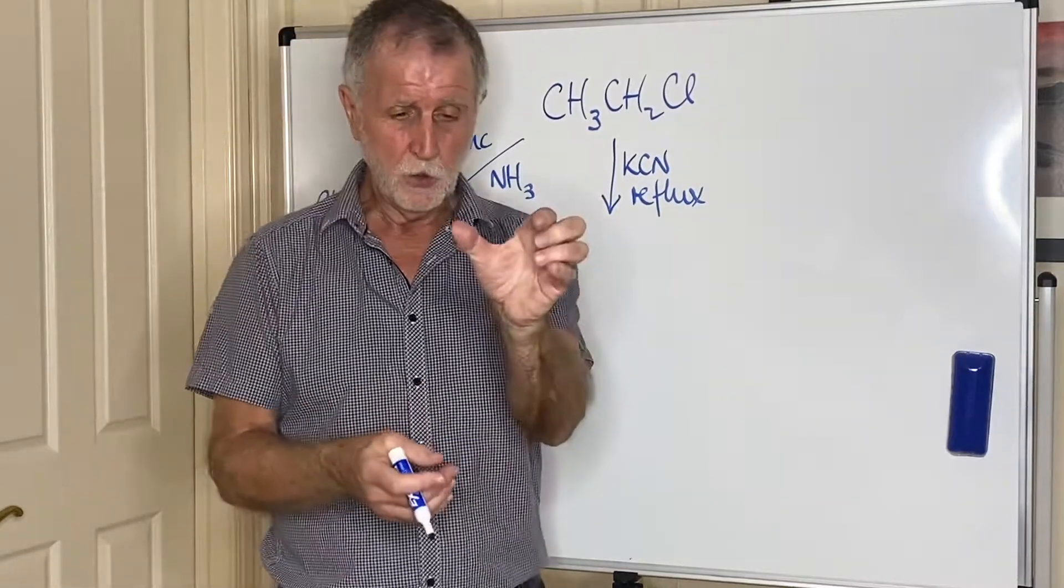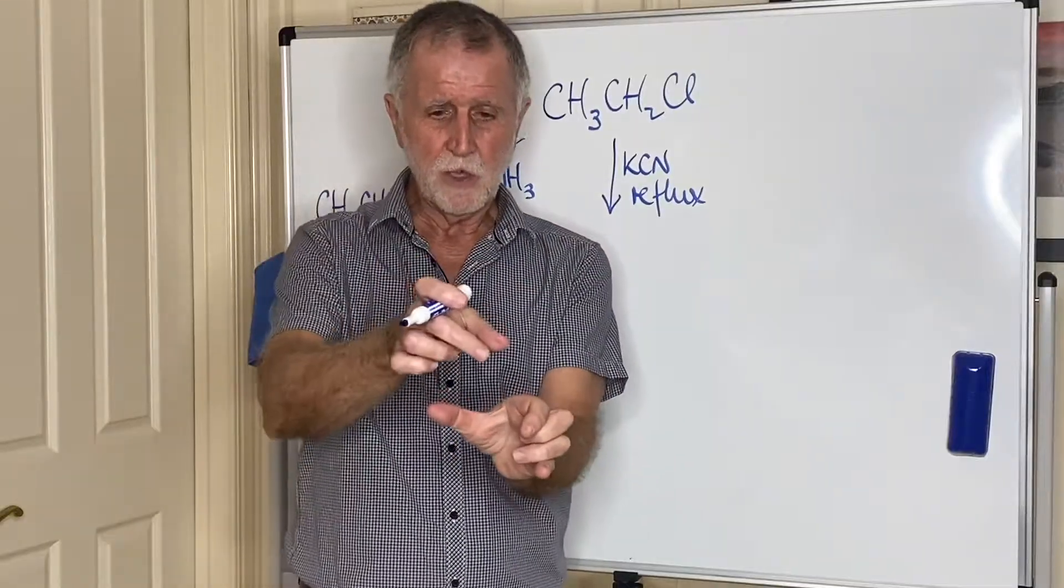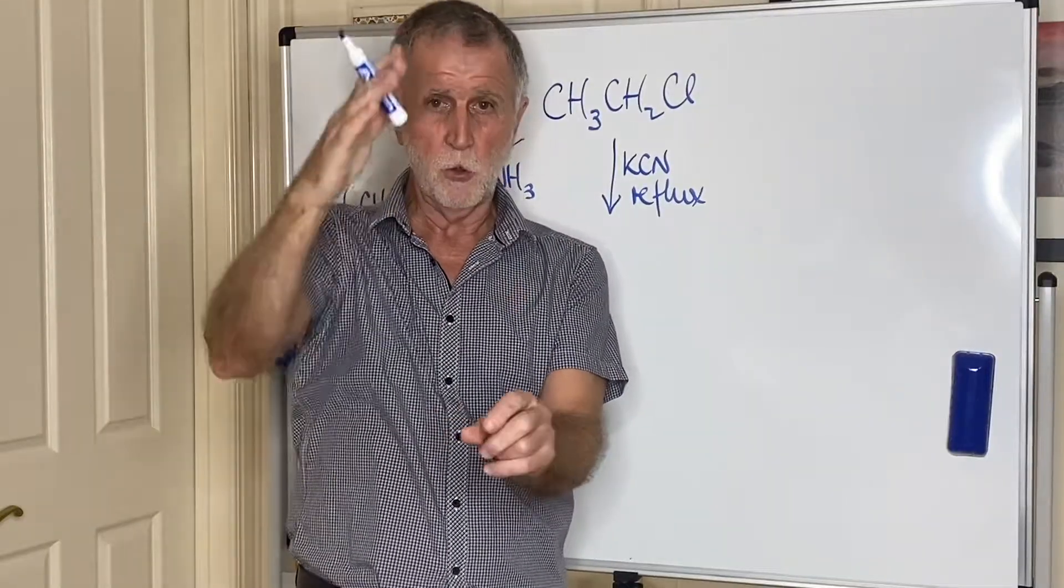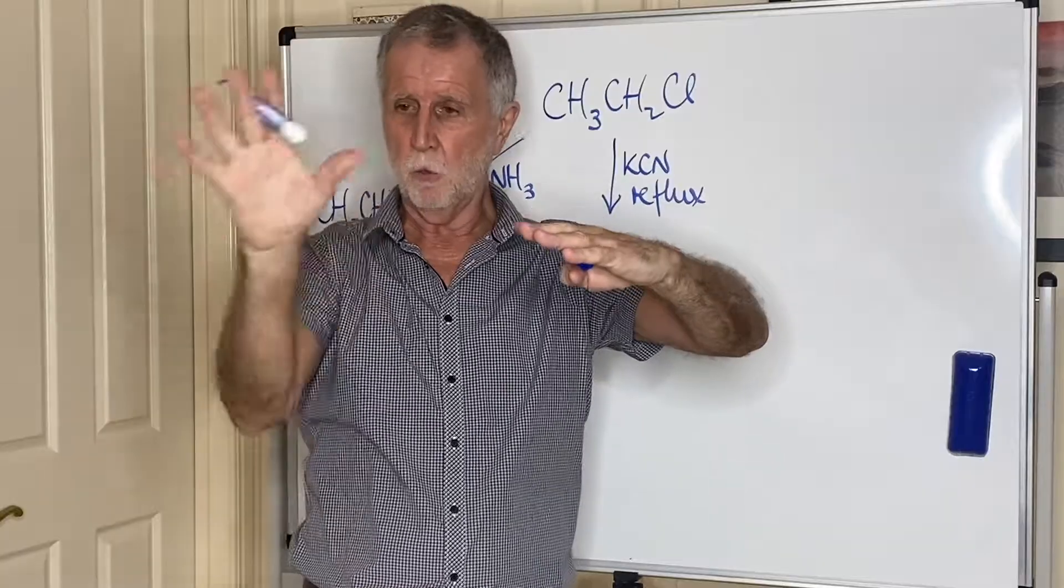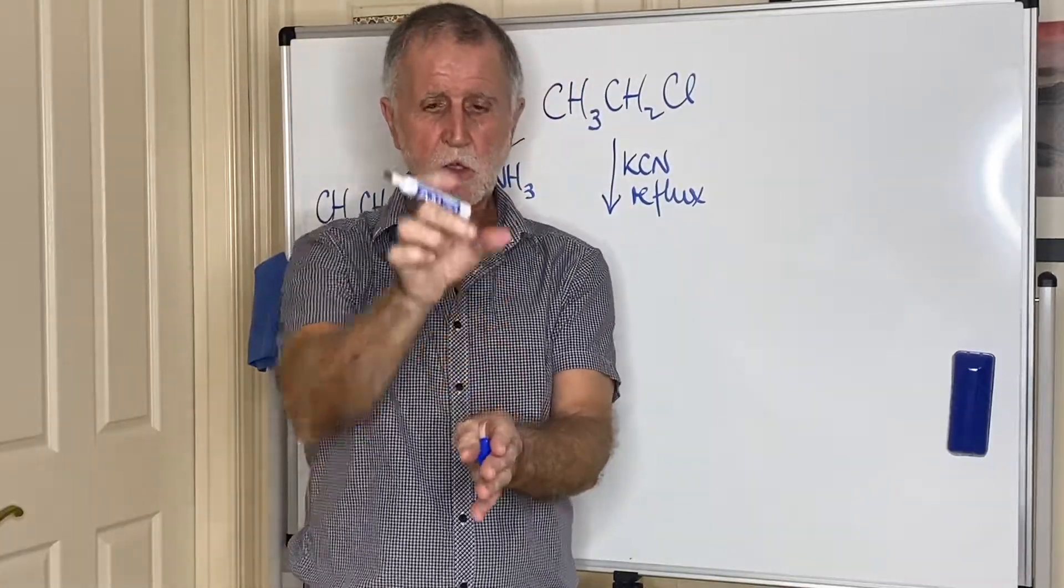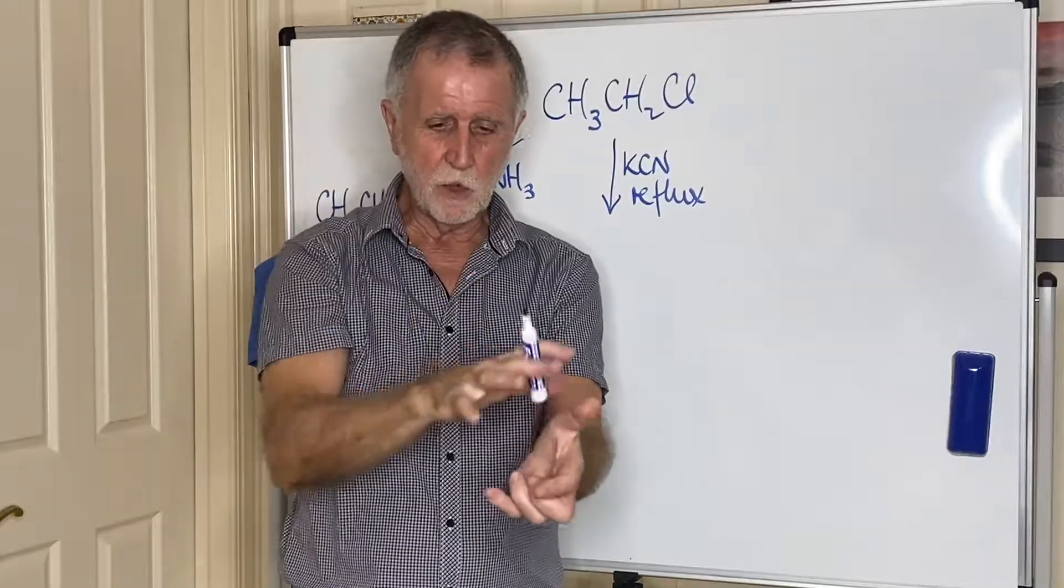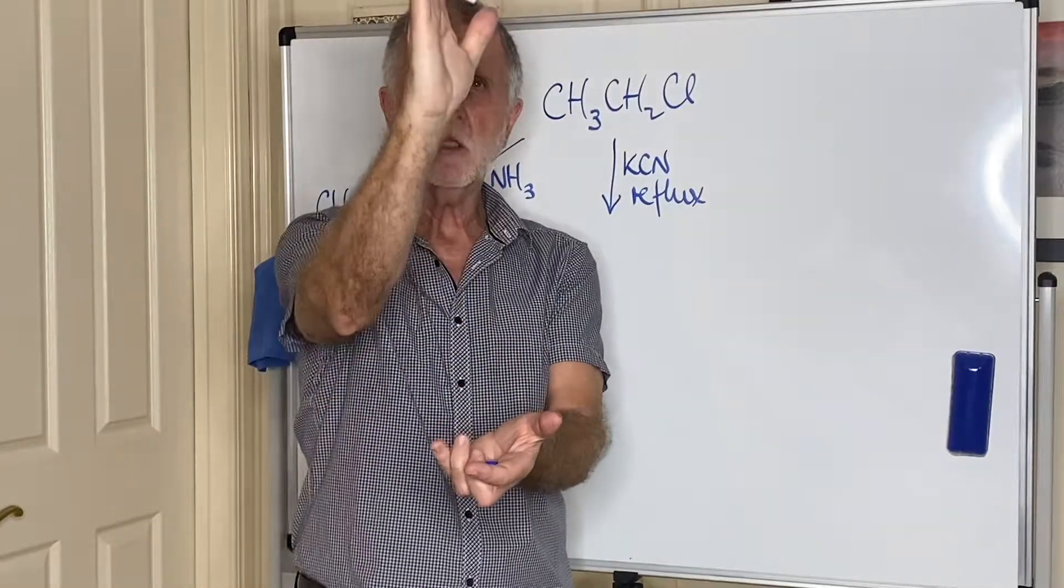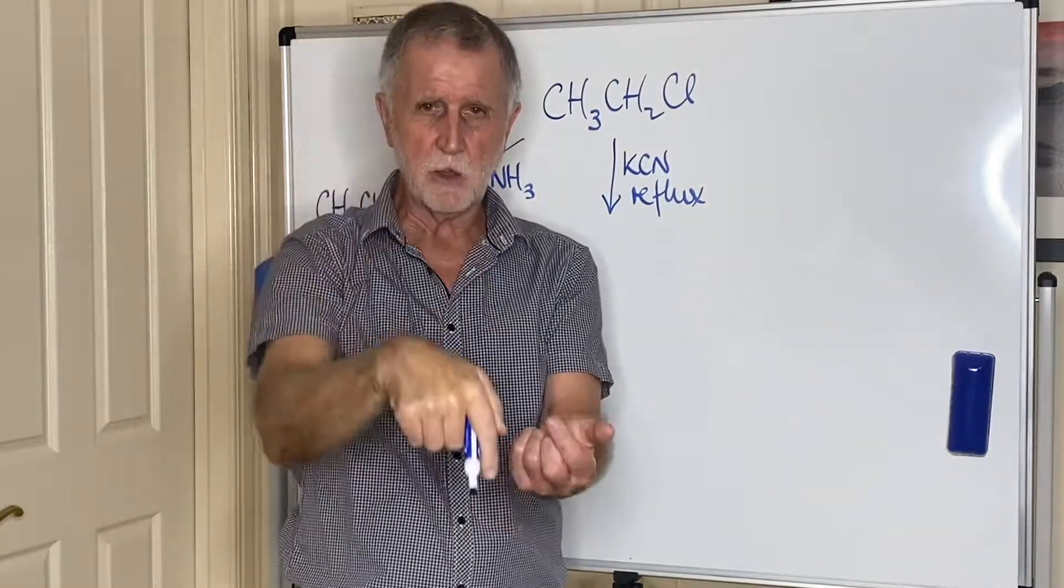And reflux is simply, you have your flask here, you have a condenser above it. Now, usually the condenser goes that way. You boil, it condenses, you collect. This time, the condenser is directly above. So, as the liquid boils, it goes up into the condenser, condenses, and drips back down again.